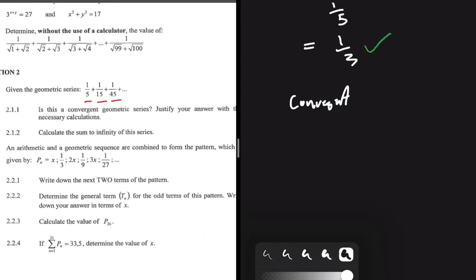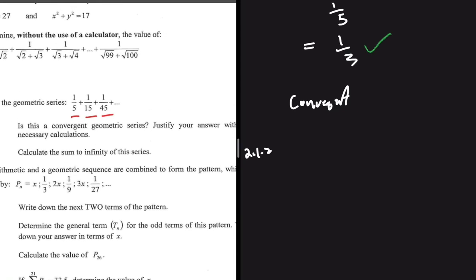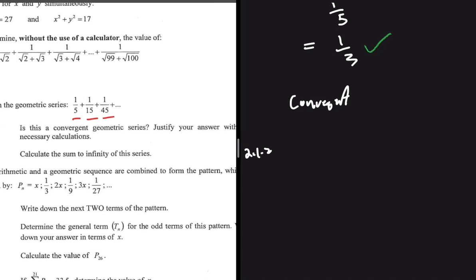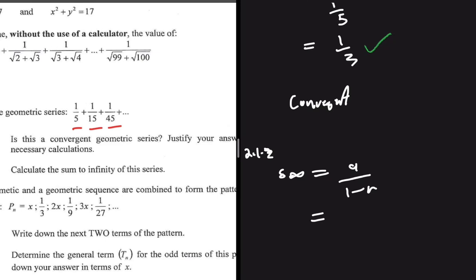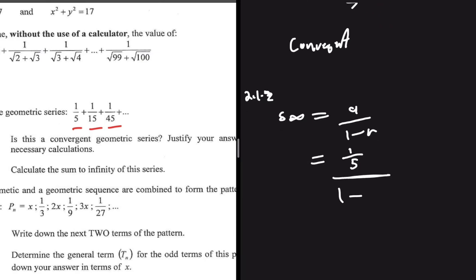2.1.2: Calculate the sum to infinity of this series. The sum to infinity by definition is equal to A divided by 1 minus R. The A we're talking about is the first term, which in our geometric series is 1 divided by 5. So we're going to have 1 divided by 5, divided by 1 minus the common ratio, which we know to be 1 divided by 3. If you put that in your calculator, you should get 3 divided by 10. So this is the sum to infinity of our series.